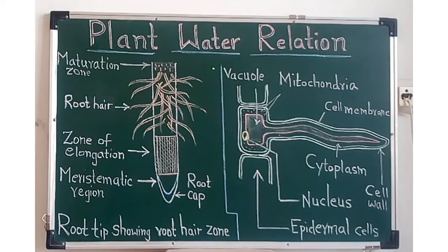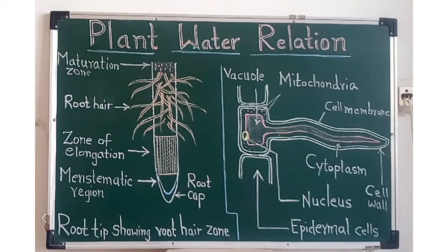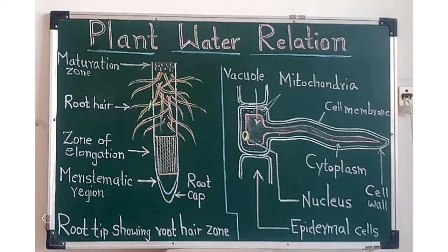Terrestrial plants absorb water in the form of liquid from the soil. Some plants, such as epiphytic plants — for example, orchids — absorb water vapor from the atmosphere with the help of epiphytic roots, which contain a special tissue called velamen.